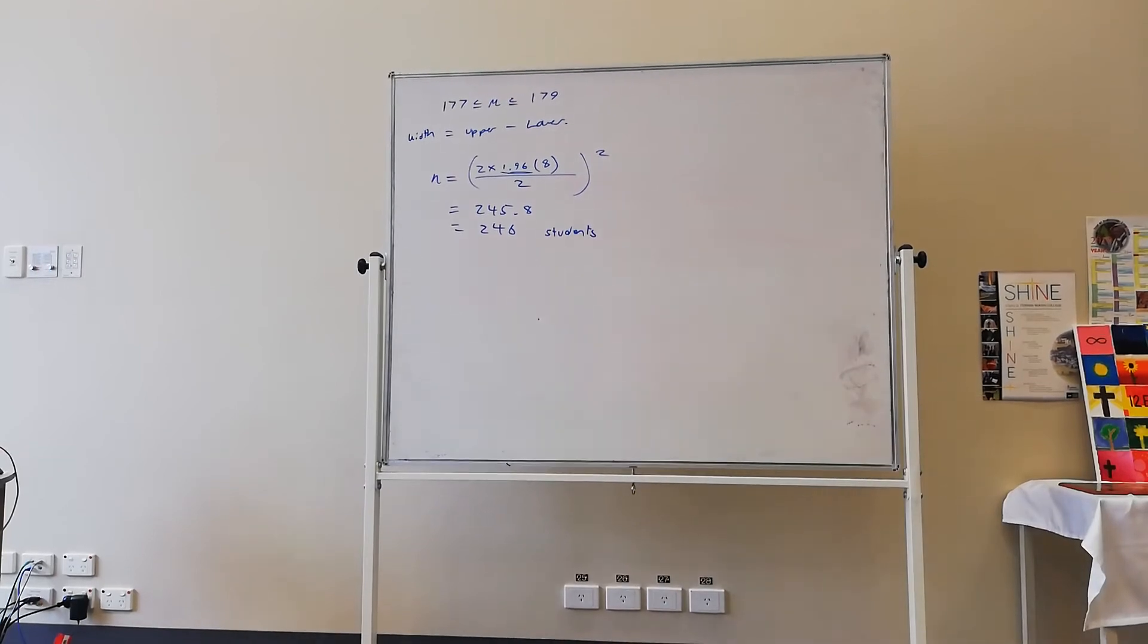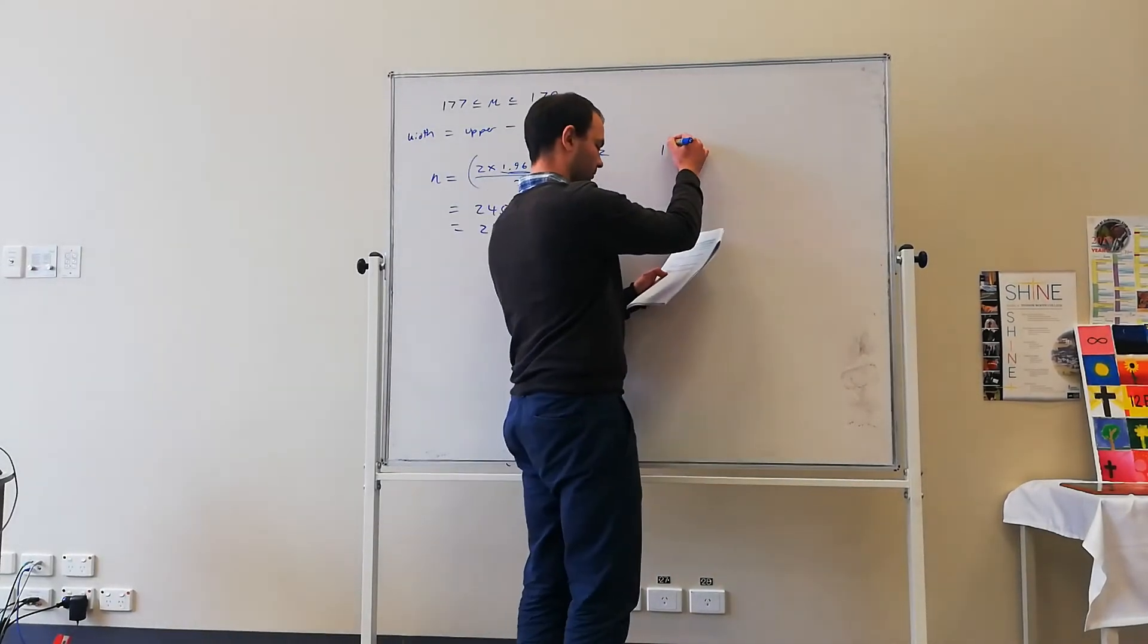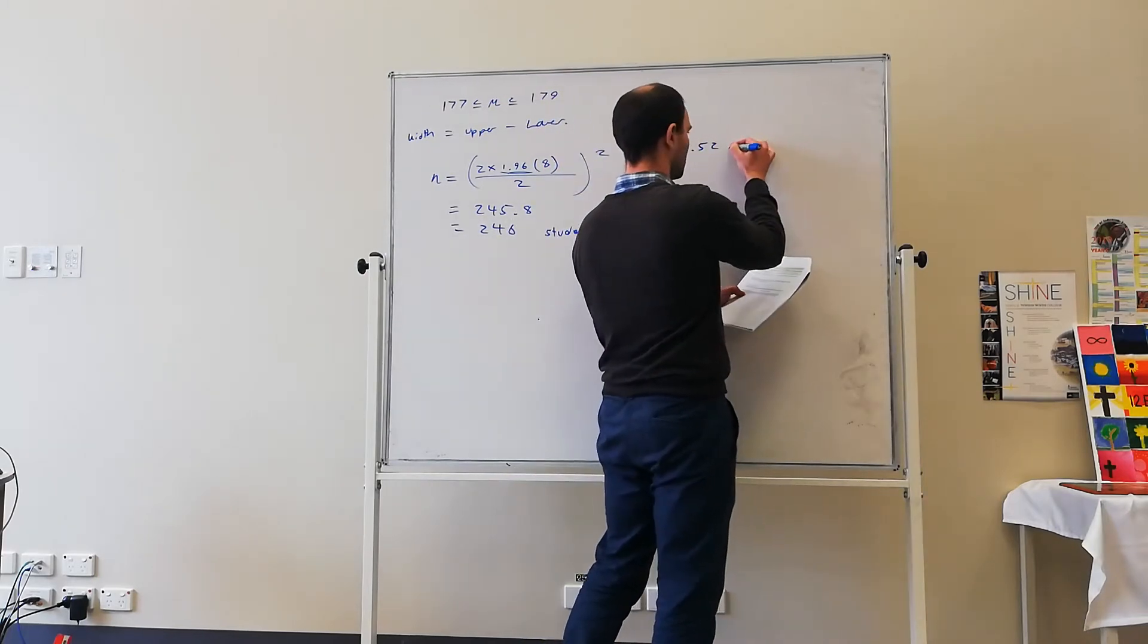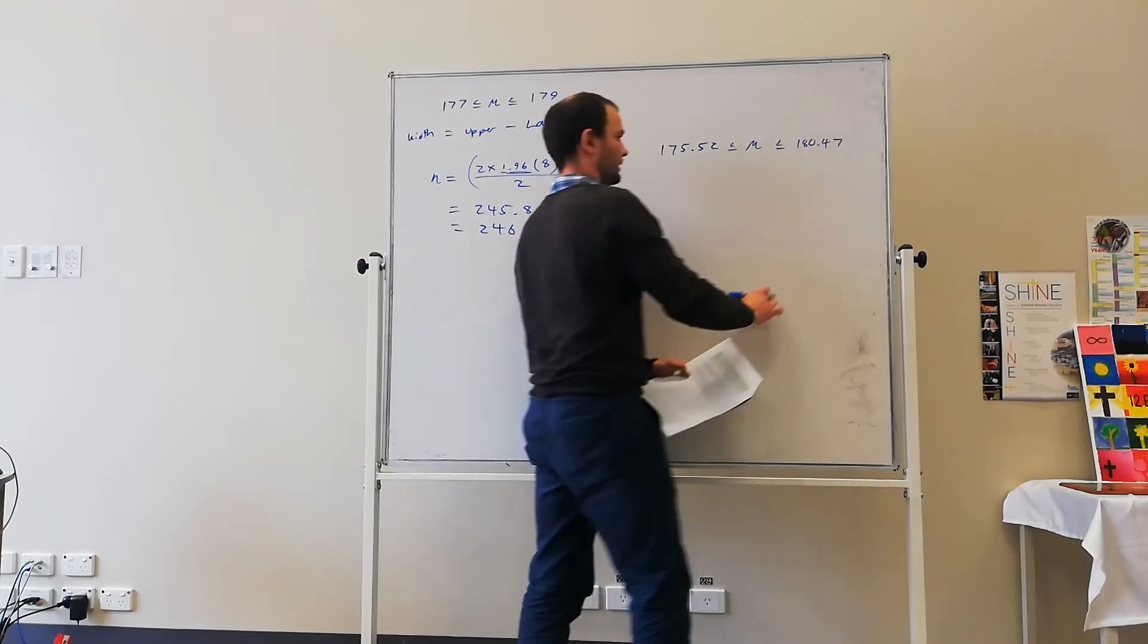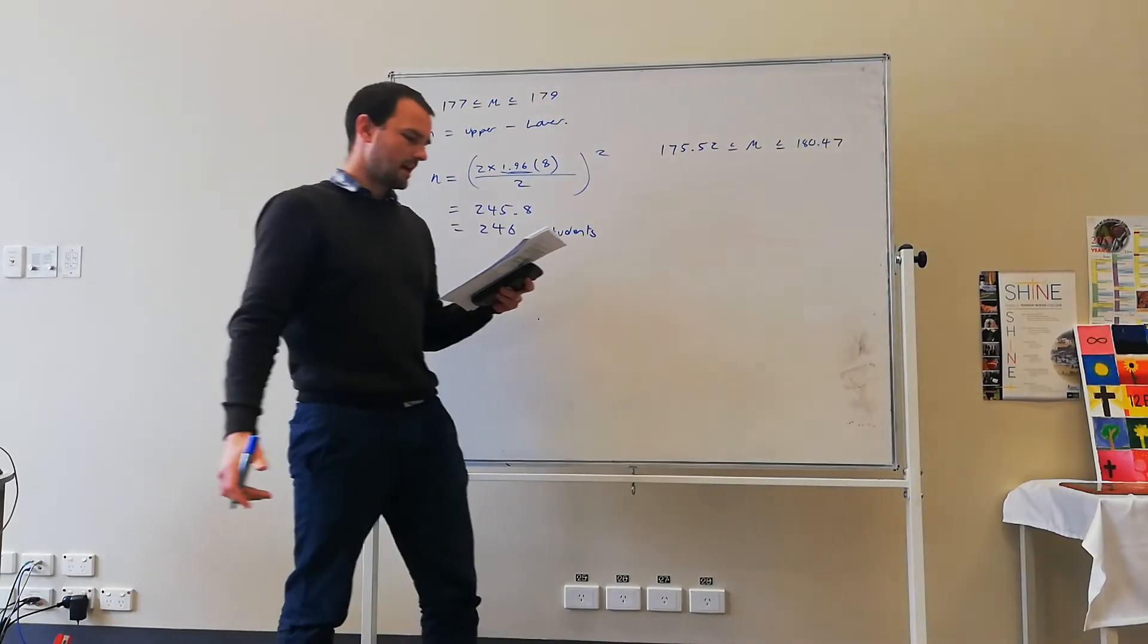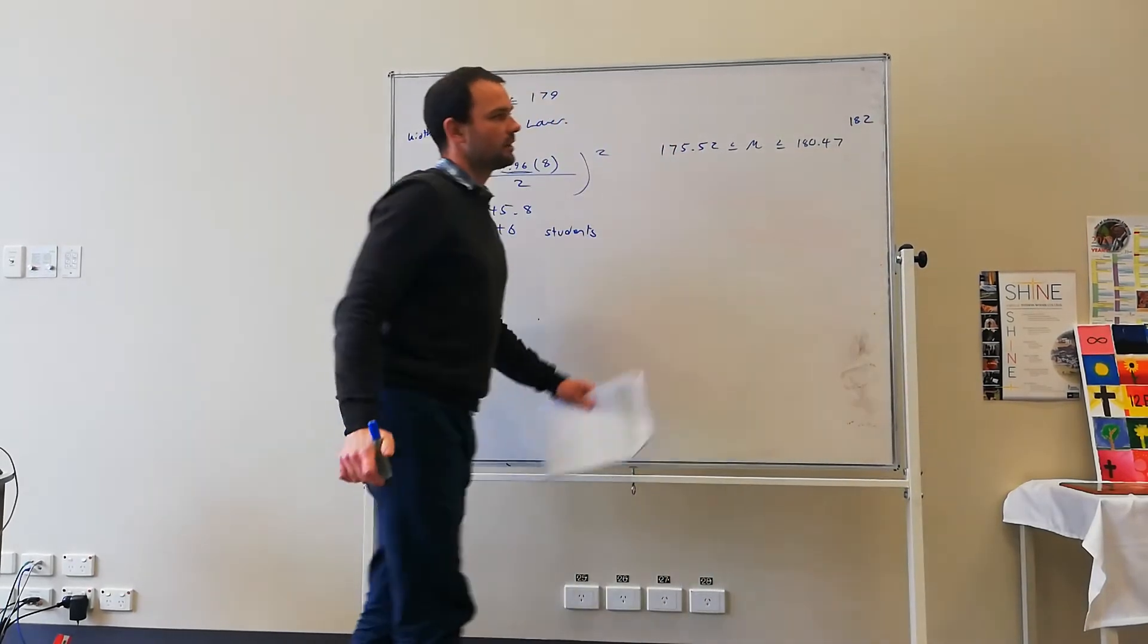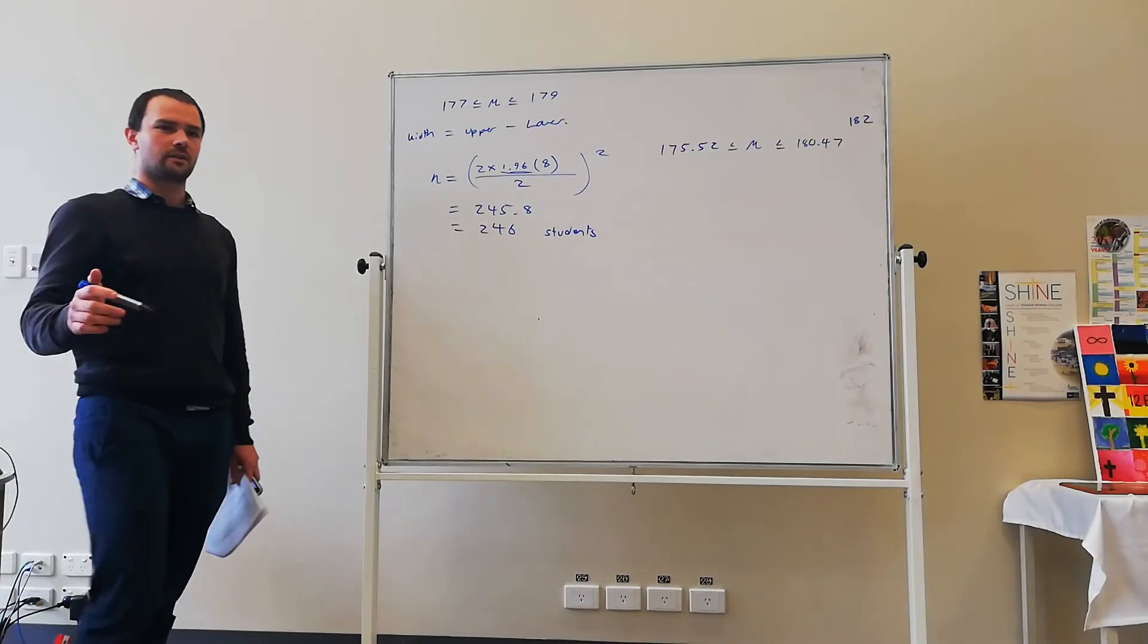Jimmy claims that the true mean height could be as high as 182cm. Okay? So we've got 175.52, 180.47. Okay? So Jimmy claims it could be as high as 182. Is this within the confidence interval? No.